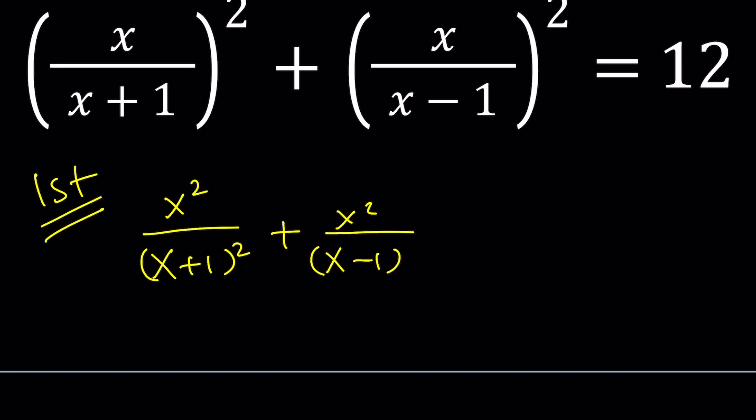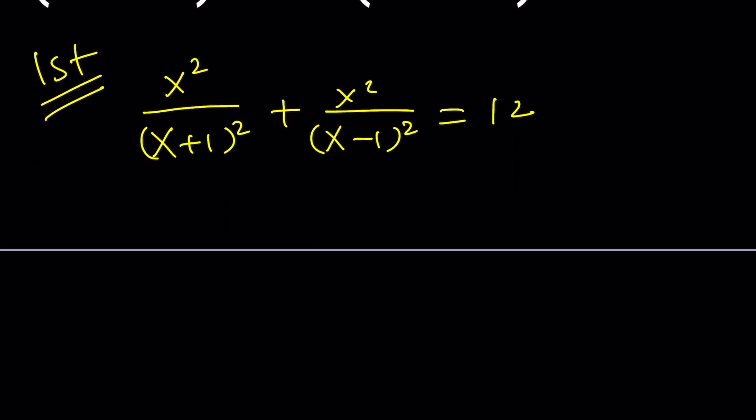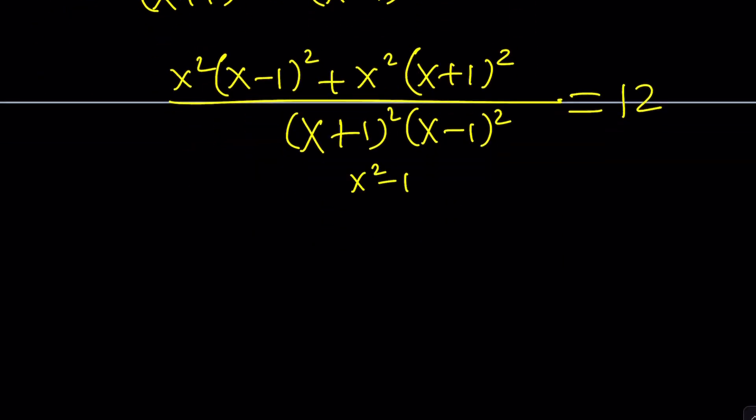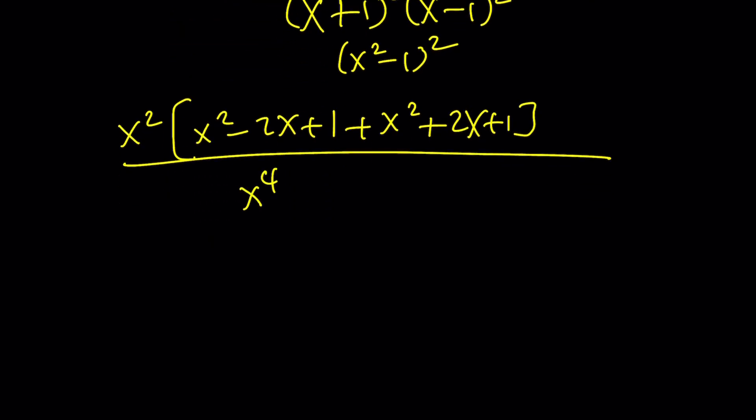All right, so if you expand everything you're going to get something like this and now we can make a common denominator. To make a common denominator I'm going to write x squared by x minus 1 squared and x squared by x plus 1 squared and add those and then divide it by the common denominator x plus 1 squared times x minus 1 squared. By the way, we could use difference of two squares to simplify this a little bit and maybe write it as x squared minus 1 quantity squared. So now here x squared is a common factor, so we could probably take that out and then that's going to be multiplied by x squared minus 2x plus 1 plus x squared plus 2x plus 1. At the bottom if I expand that you're going to get x to the fourth minus 2x squared plus 1 and that's equal to 12.